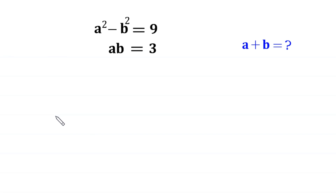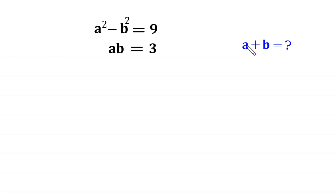Hello everyone, you are welcome. We will solve this very nice system of equations: a squared minus b squared is equal to 9, and ab is equal to 3. Our job is to find all possible values of a plus b.